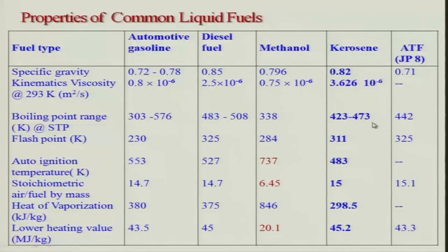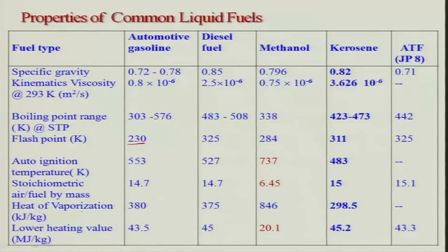If the fuel is not atomized properly it cannot be burned properly. Boiling point range is also important. Regarding auto-ignition temperature, the highest is methanol, followed by gasoline, while kerosene has the lowest — making kerosene the most hazardous among these fuels. The stoichiometric air-fuel mass ratio is around 15 for most fuels, with methanol at 6.43. The lower heating value is used for calculations; most fuels are around 40 to 45 MJ/kg.